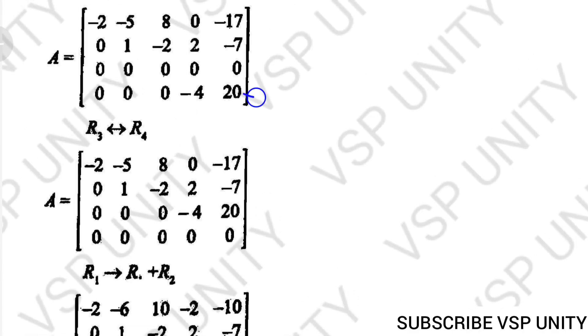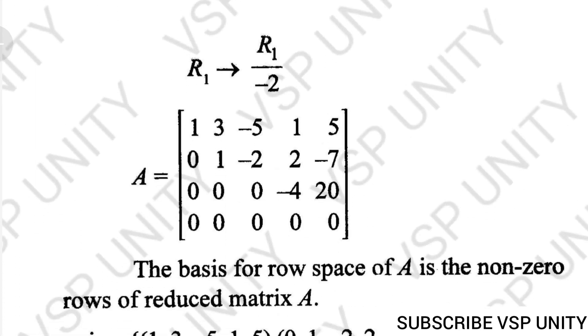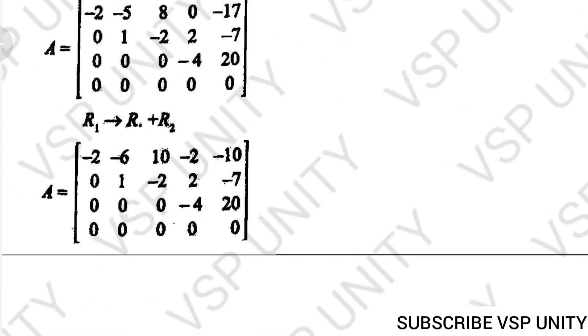If you observe R4, all the terms are multiples of 2. So all terms will be divided by 2. Then you will get 0, 0, 0, -4, 20. Now interchange R3, R4. Bring R3 to here and R4 to here. If you interchange, you will get like this. Next, R1 changes to R1 minus R2.